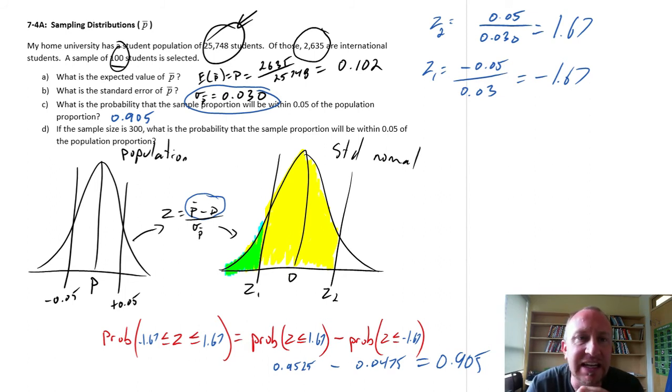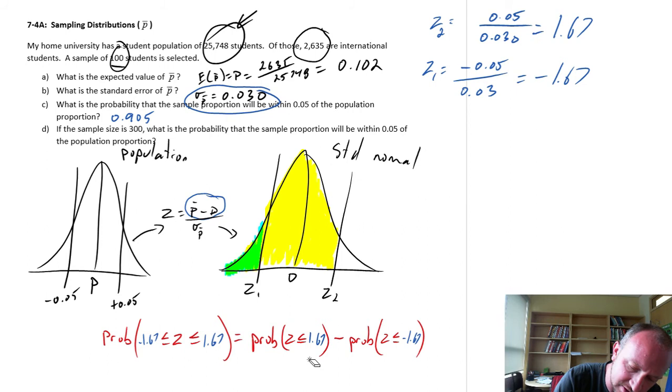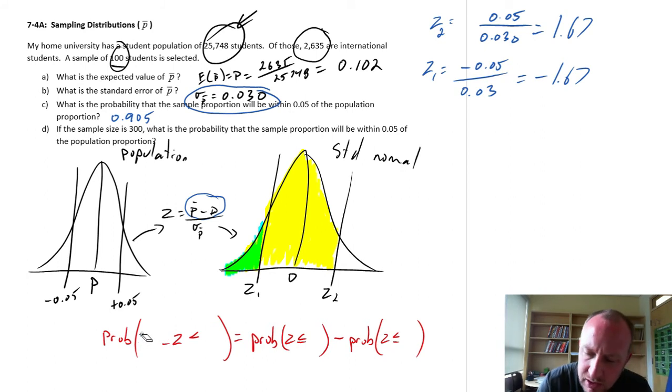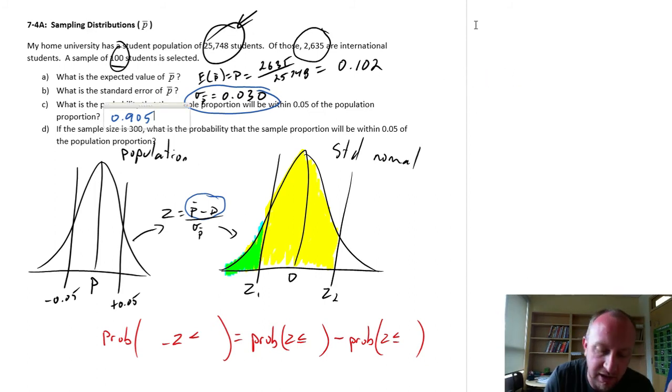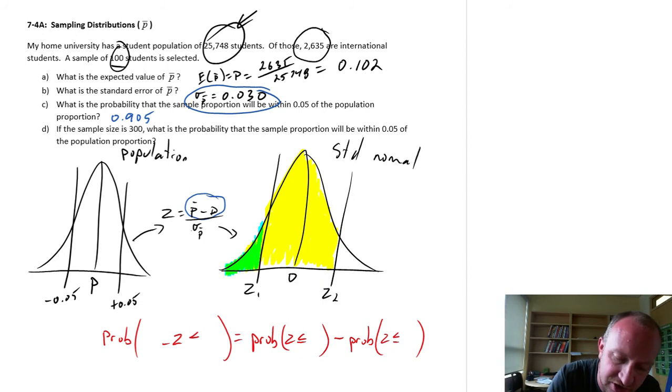Part D, if we increase the sample size from 100 to 300, what does that do to our probabilities? So let's go through a few more calculations. I'm just going to erase the blue, because we're going to need to recalculate some of these values. So what we need first, we'll need our new standard error. The numerator is not going to change. We're still looking at a gap of 0.05. But we need a new standard error, because that's what's affected by the sample size.